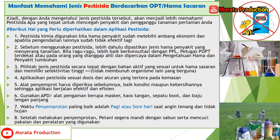Yang kedua, sebelum penggunaan pestisida, lebih dahulu dipastikan jenis hama penyakit yang menyerang tanaman. Bila ragu-ragu, lebih baik berkonsultasi dengan pihak PPL, petugas POPT terdekat, atau pada orang yang dianggap ahli dalam pengetahuan hama atau penyakit tumbuhan. Yang ketiga, pilihlah jenis pestisida secara tepat dengan bahan aktif yang sesuai untuk hama sasaran dan memiliki selektivitas tinggi, yaitu tidak membunuh organisme lain yang berguna. Yang keempat, aplikasikanlah pestisida sesuai dosis dan aturan yang tertera pada kemasan. Yang kelima, alat penyemprot atau sprayer harus diperiksa sebelum digunakan baik kondisi maupun kebersihannya, sehingga aplikasi berjalan efektif dan efisien.